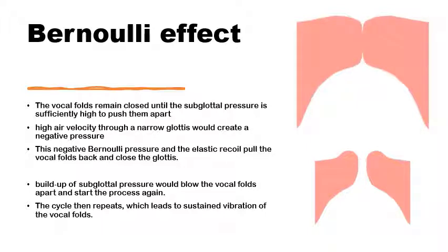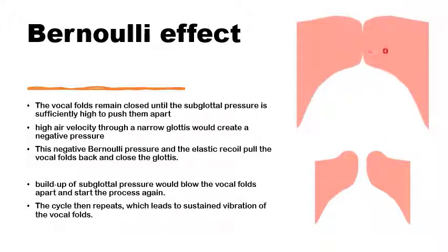Starting with the Bernoulli effect — this was the initially proposed mechanism for self-sustained oscillation, with repeated cycles of opening and closing of the glottis due to the build-up of pressure when the glottis is closed. Above a certain limit, this pressure drives the vocal folds apart and air escapes, creating a jet of air with high velocity that generates a negative pressure around it, which closes up the vocal folds again. A new cycle then starts with a build-up of pressure, and the Bernoulli effect closes the vocal folds once more.